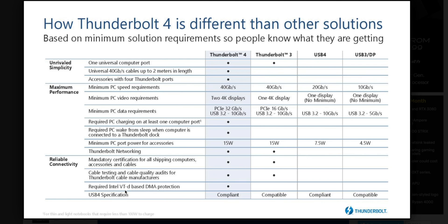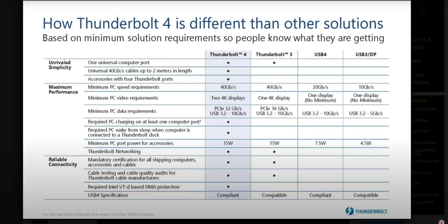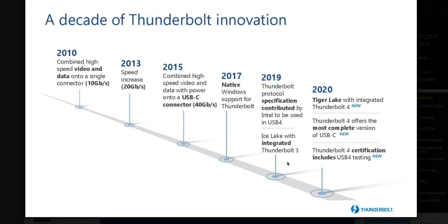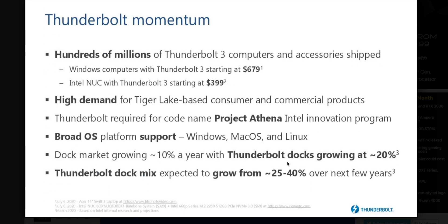Thunderbolt 4 on 11th generation doesn't require a discrete Thunderbolt controller because Thunderbolt is built into the CPU. This means Thunderbolt 4 is going to have a lot less latency than Thunderbolt 3, even though it's the same bandwidth. There's also one neat feature: with Thunderbolt 4 you can put a Thunderbolt port on either side of the laptop.